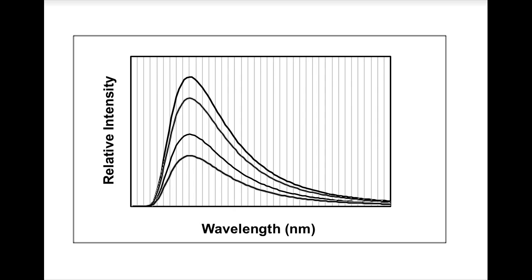So here's a graph with several different emission curves for several different objects. Here's a question for you. Which object is the hottest? Now don't be fooled. This is a trick question. Look, they're all at the same temperature. How do I know? Because they all have the exact same peak wavelength.